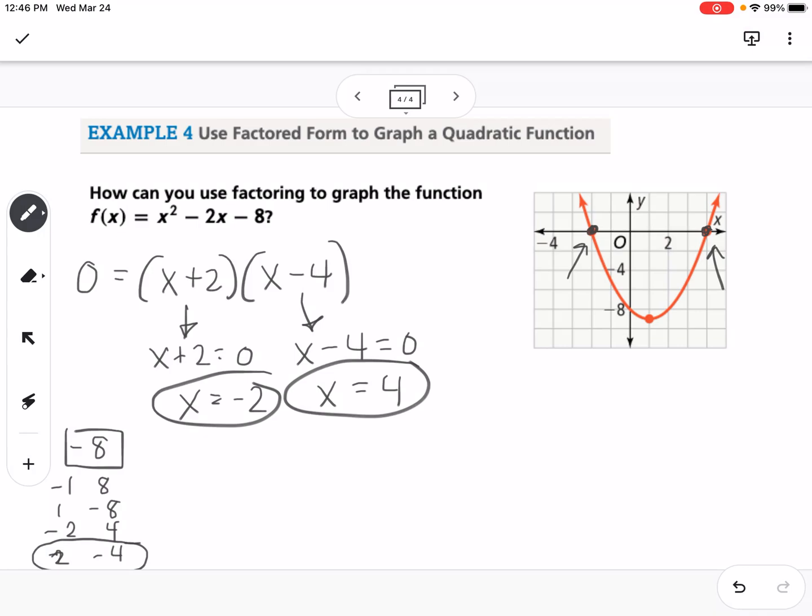If we go back to some of our previous lessons, I know I can find the vertex using negative b over 2a. So that would be negative negative 2 over 2 times 1. That's 2 over 2, which is just 1, and then I can plug that into my function. So it would be 1 squared minus 2 times 1 minus 8, and I get negative 9.